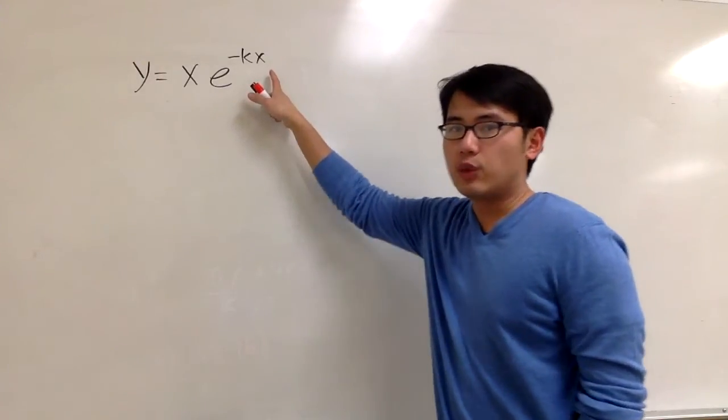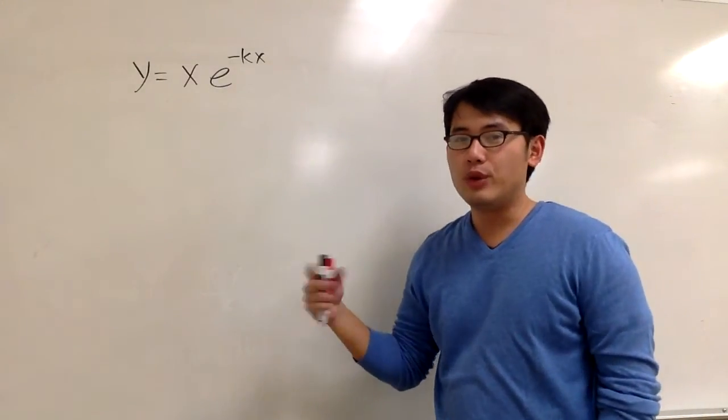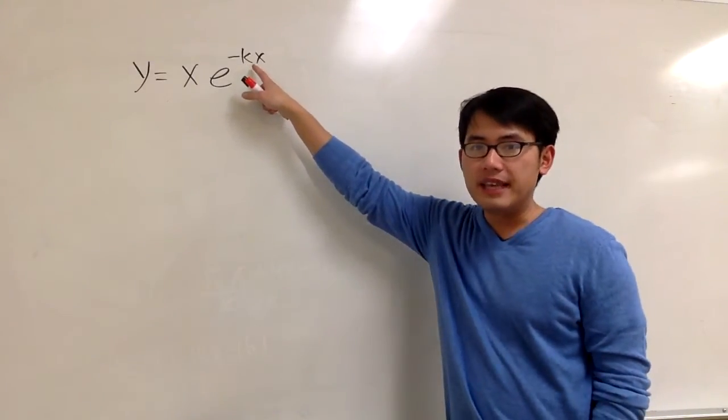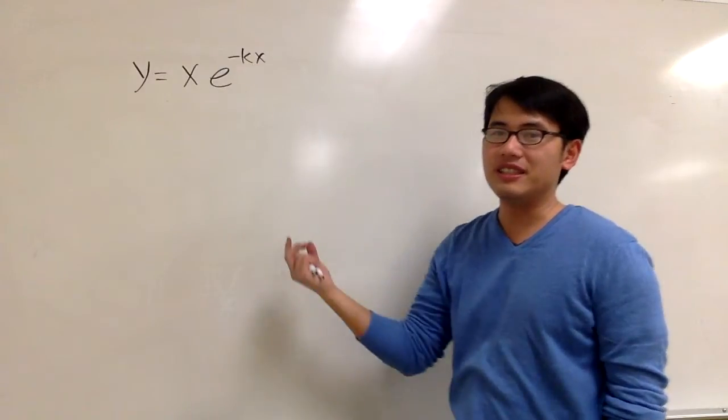Usually when you see x and y in the equation, those are the variables. And when you see other letters, such as this one, k in this case is considered to be a constant, just like number 6.